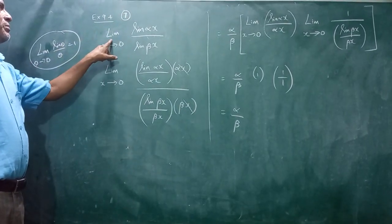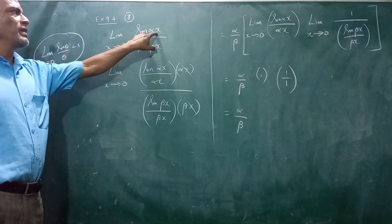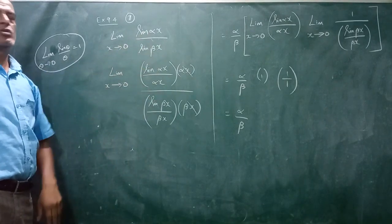This is 9.4, seventh problem. Limit x tends to 0, sin alpha x divided by sin beta x, where alpha and beta are constants.